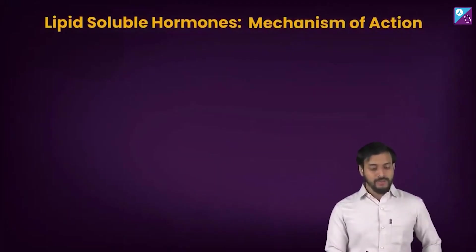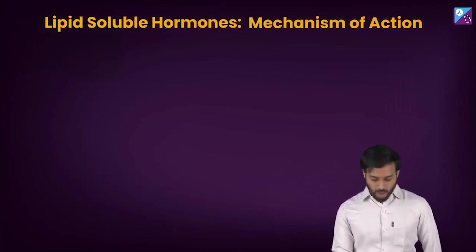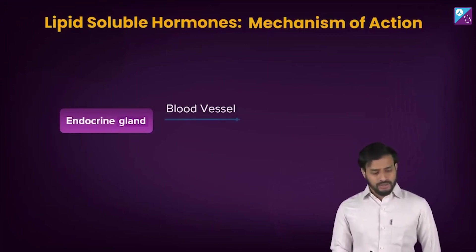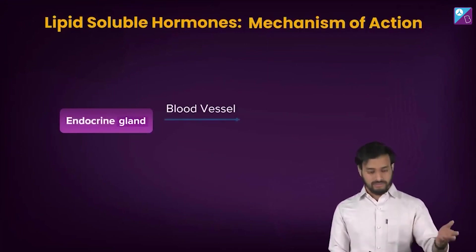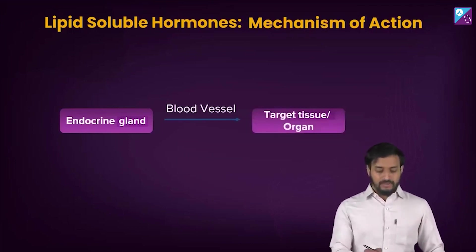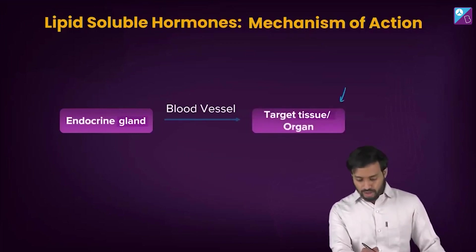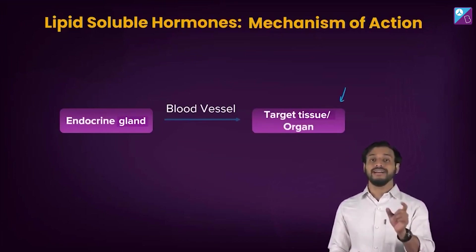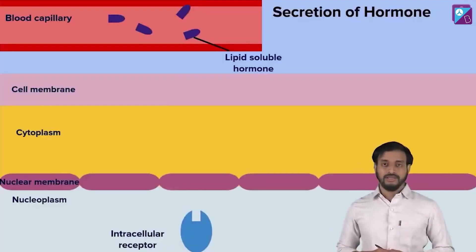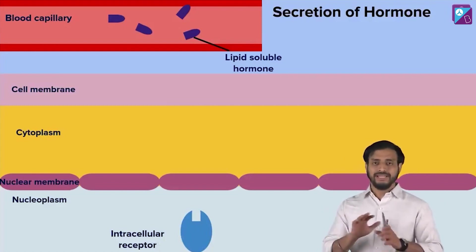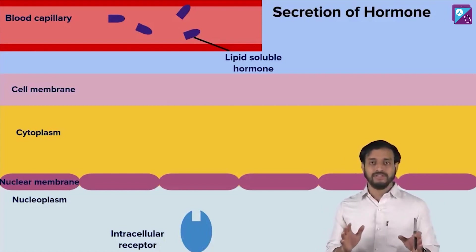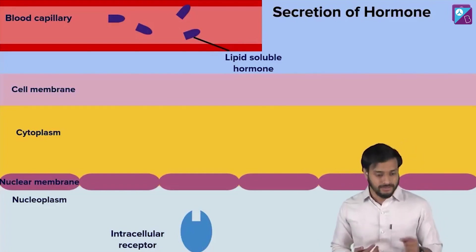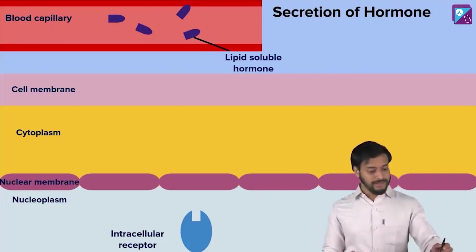Now talking about the mechanism of action for the lipid soluble hormones. Endocrine glands — we have studied about this — the secretions will be put into the blood, and through the blood it will reach the target cells, target tissues, or the organs. Endocrine glands are ductless glands. This is a schematic, a very simplistic representation. At the top you can see the blood capillaries.